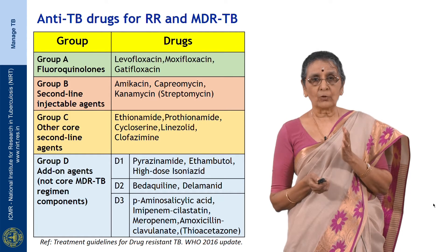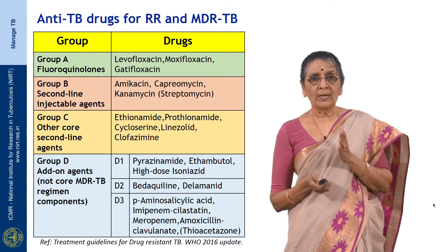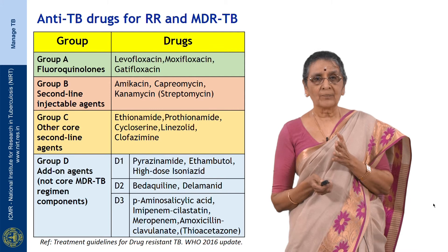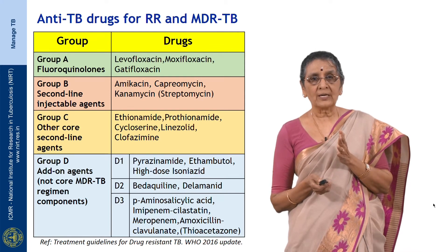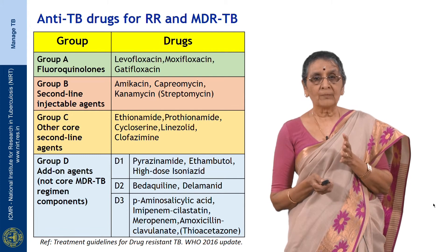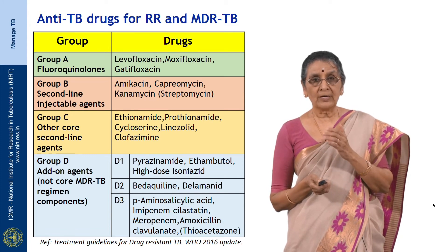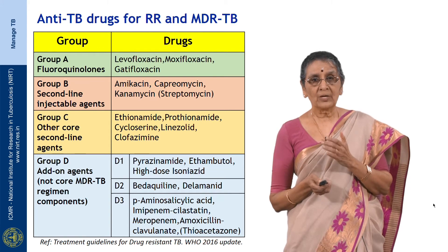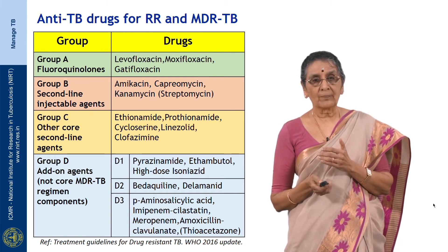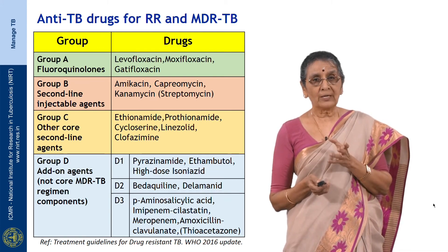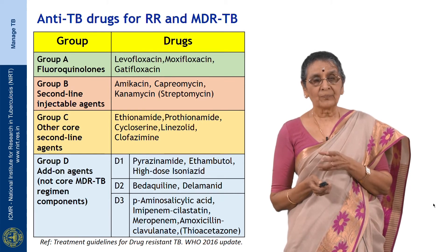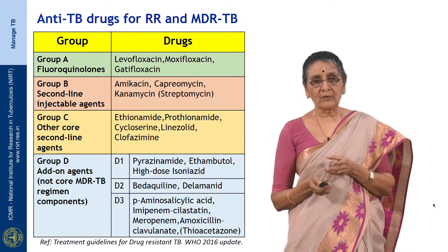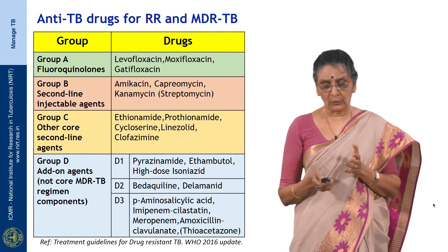Group A drugs for MDR-TB are fluoroquinolones. Group B is second-line injectable drugs like amikacin. Group C is other second-line agents like ethionamide and prothionamide. Group D is further divided into D1, D2, and D3, consisting of pyrazinamide, ethambutol, bedaquiline, and other drugs. In MDR-TB, regimens are designed including all 4 groups of drugs — that will be covered in a separate session.